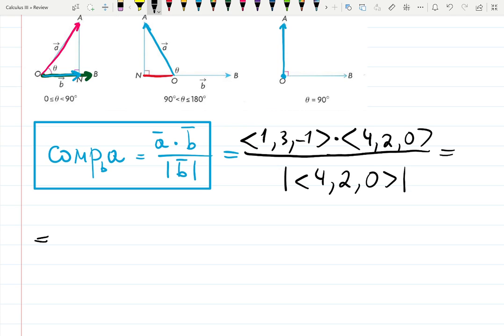This will give me... Remember the dot product is just a product of component by component added together. So 1 times 4 plus 3 times 2 plus 0 times minus 1, all over the magnitude will be a square root: 4 squared plus 2 squared plus 0 squared.